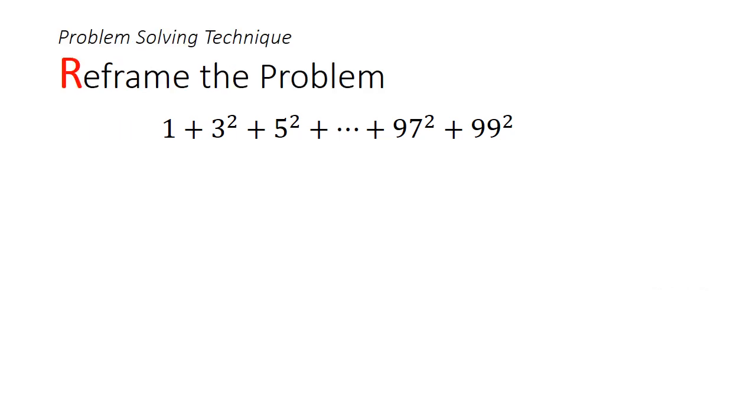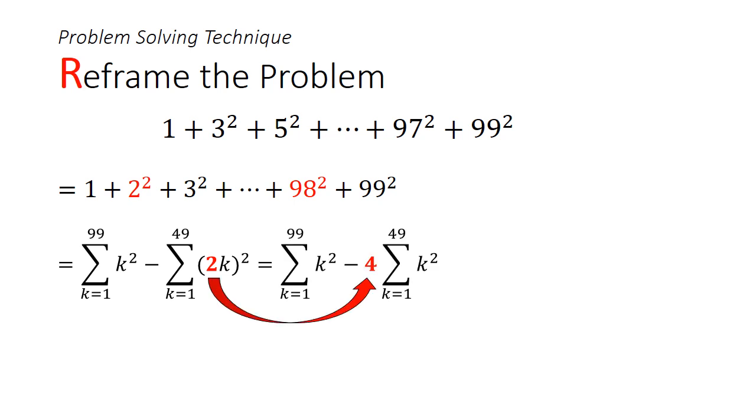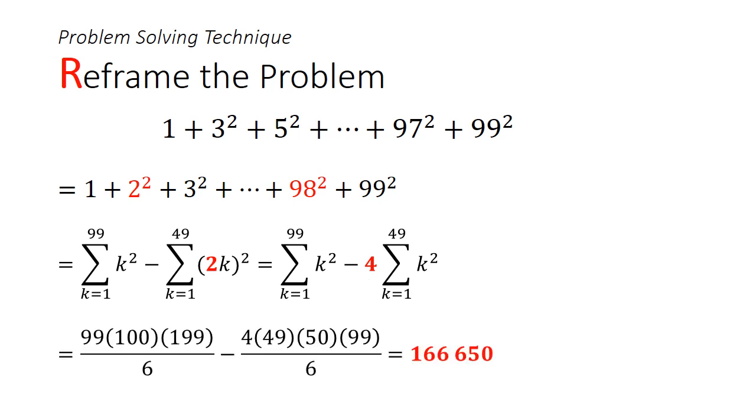Let's begin by reframing this problem. Instead of thinking of the sum of odd squares, let's think of it as the sum of all squares. And we will deduct away the even squares later. We can rewrite this in summation notation. We can factorize out the 4 from the second square. This will give us the sum of squares from 1 to 99, deducting 4 times the sum of squares from 1 to 49. Using our sum of square formula, we will get a result of 166,650.